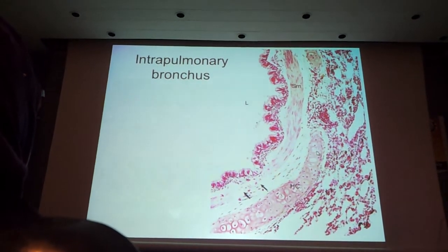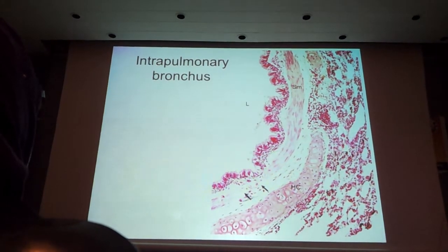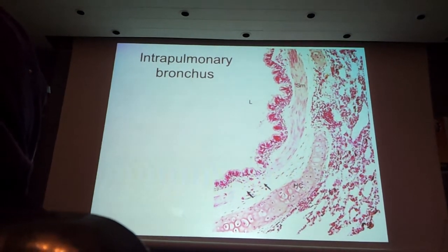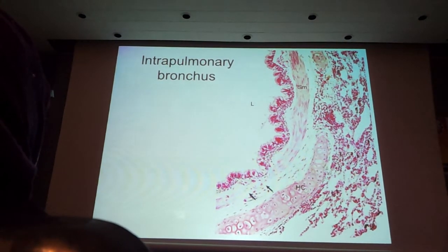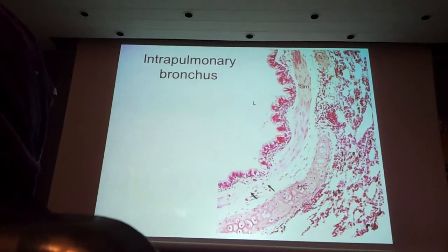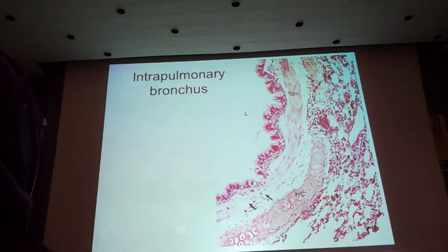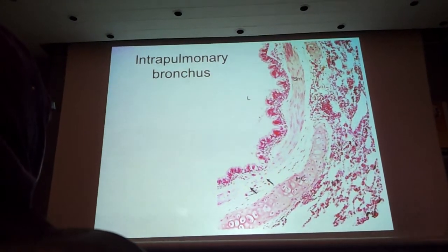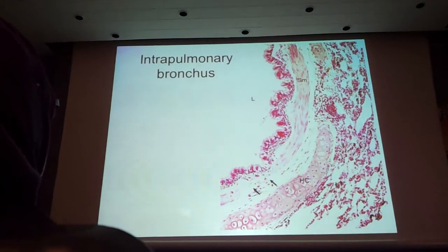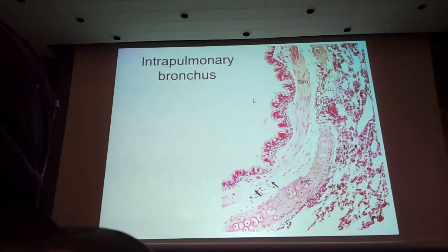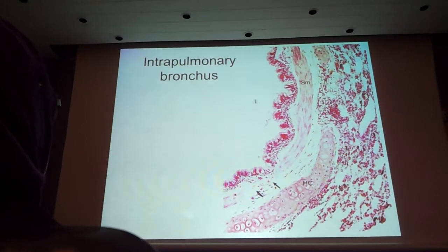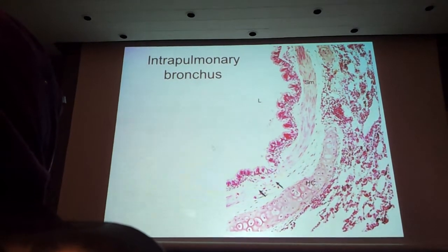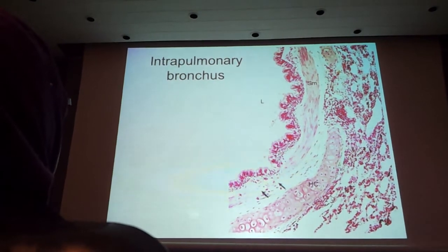We mentioned before that there are extra-pulmonary and intra-pulmonary bronchi. Extra-pulmonary bronchi are just the primary bronchi — there are two, right and left. Their structure is identical to the trachea, with thinner walls and smaller diameters. For intra-pulmonary bronchi, which are secondary and tertiary, there are differences.